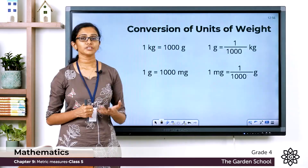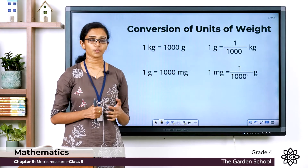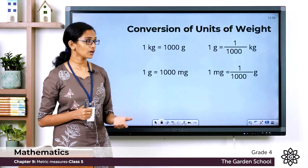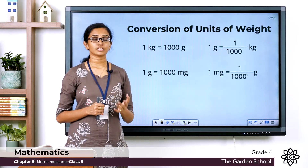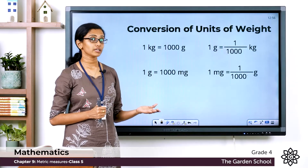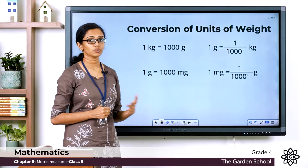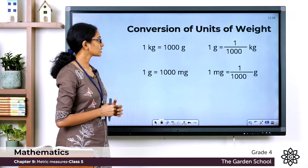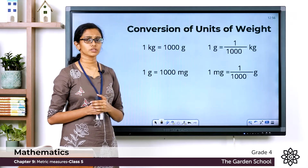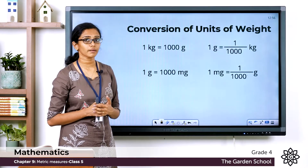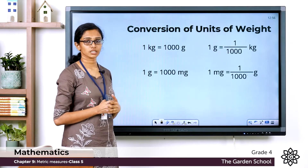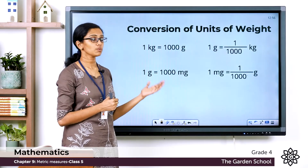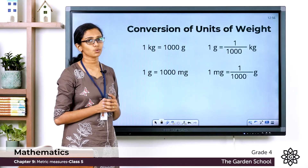Now we'll talk about a few different units of weight. You have already learned this in your lower classes, so you already know one kilogram means it is a thousand grams. The word kilo means thousand — one kilogram means it's a thousand grams. If one kilogram equals a thousand grams, then two kilograms would be two thousand grams, three kilograms would be three thousand grams, five kilograms would be five thousand grams, and so on.